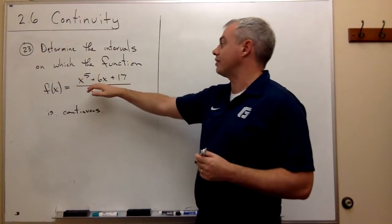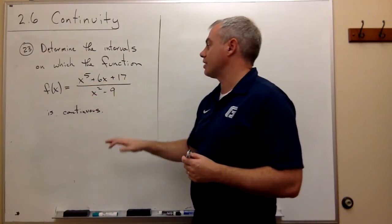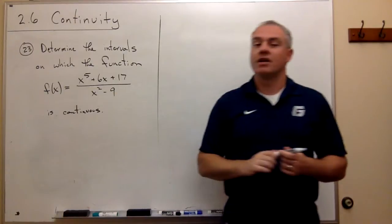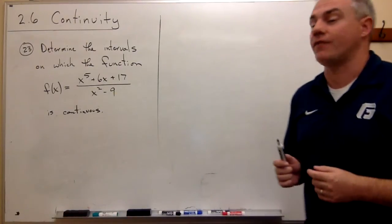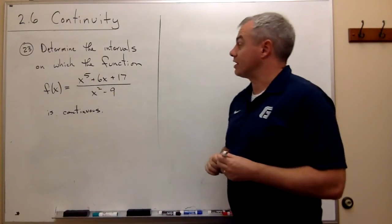is equal to x to the fifth plus 6x plus 17 over x squared minus 9 is continuous. So let's look at this function and determine on what intervals this guy is going to be continuous.